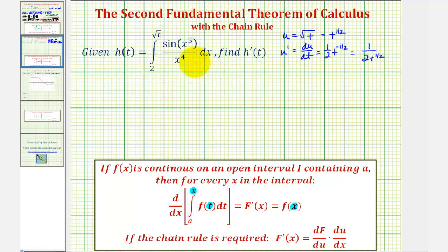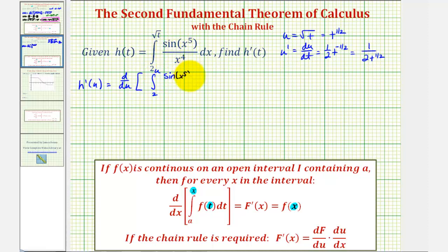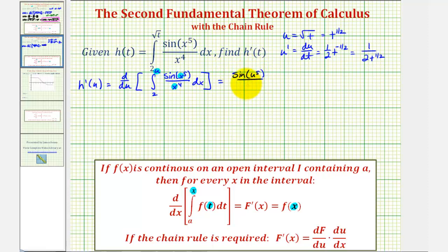Now let's write this in terms of u. We can now say that h prime of u would be equal to the derivative with respect to u of the integral from two to u of sine x to the fifth divided by x to the fourth dx. Notice in this form we can apply the theorem exactly as stated, meaning to evaluate this, we can substitute u for x.